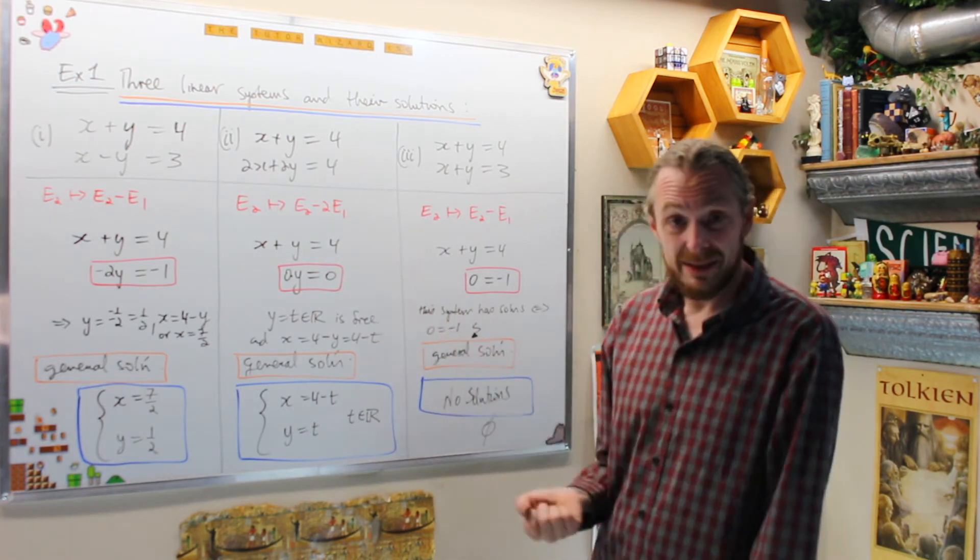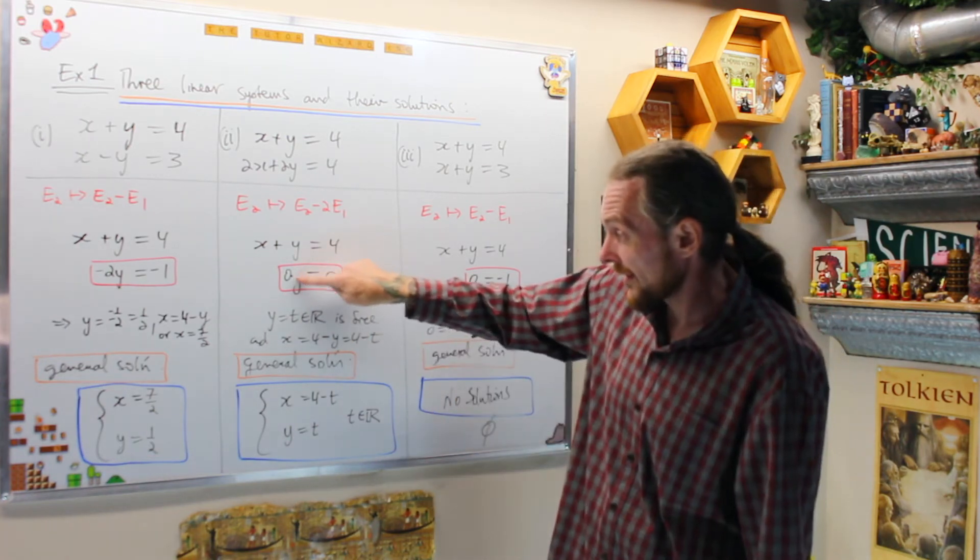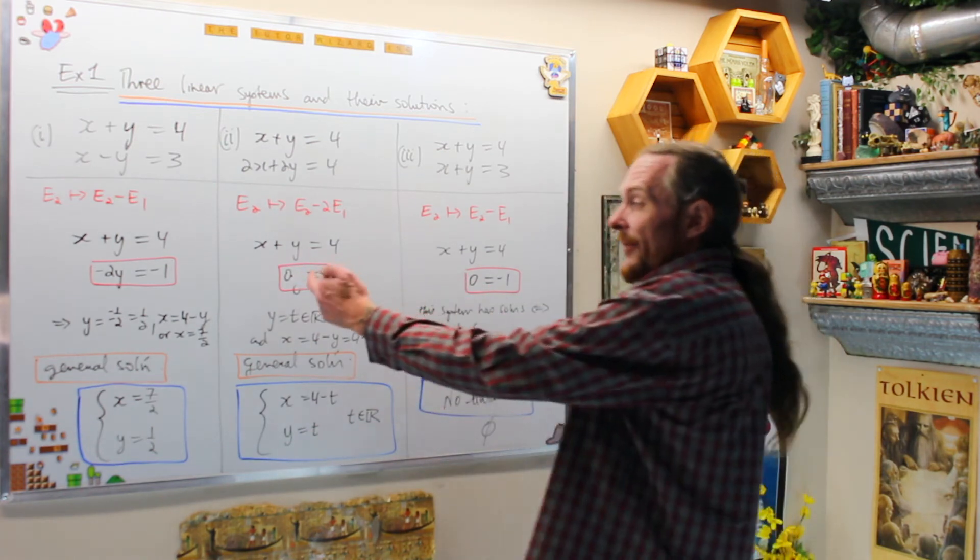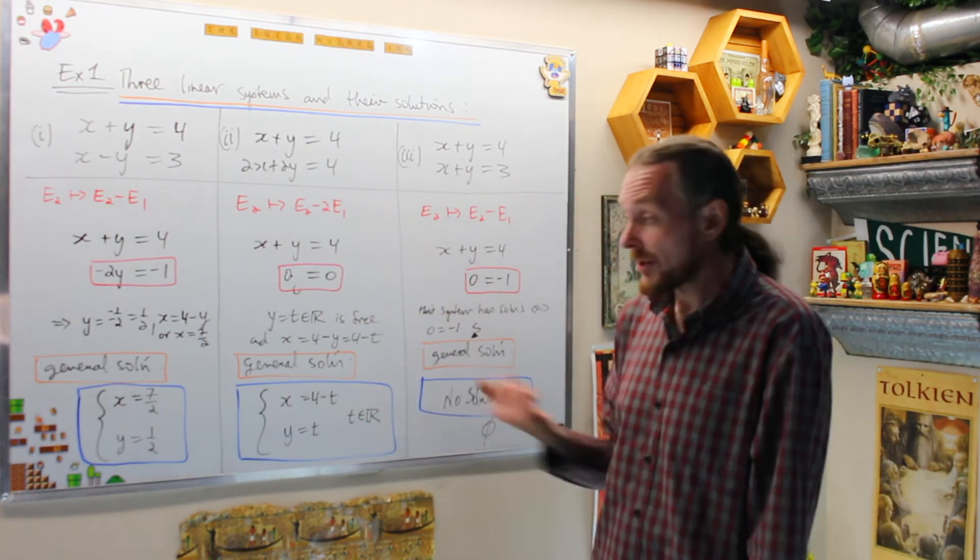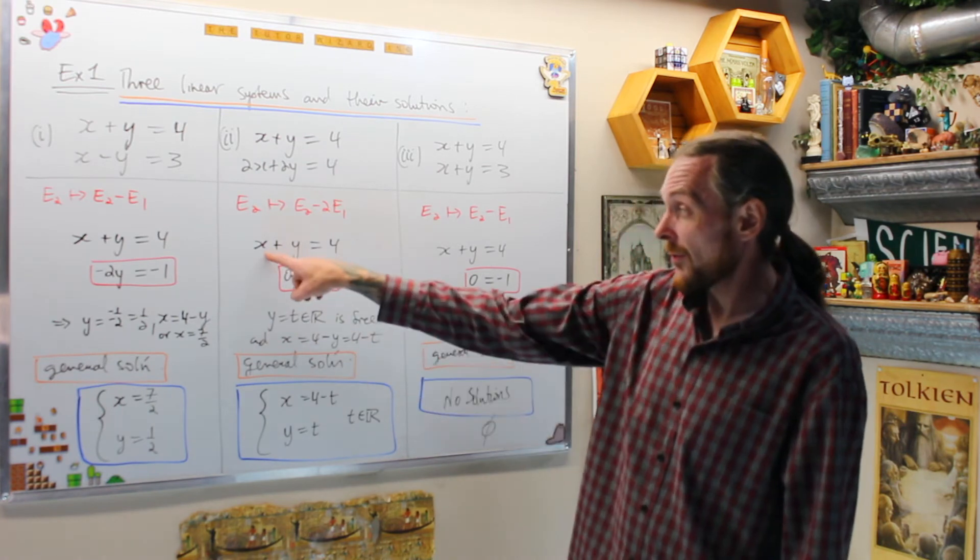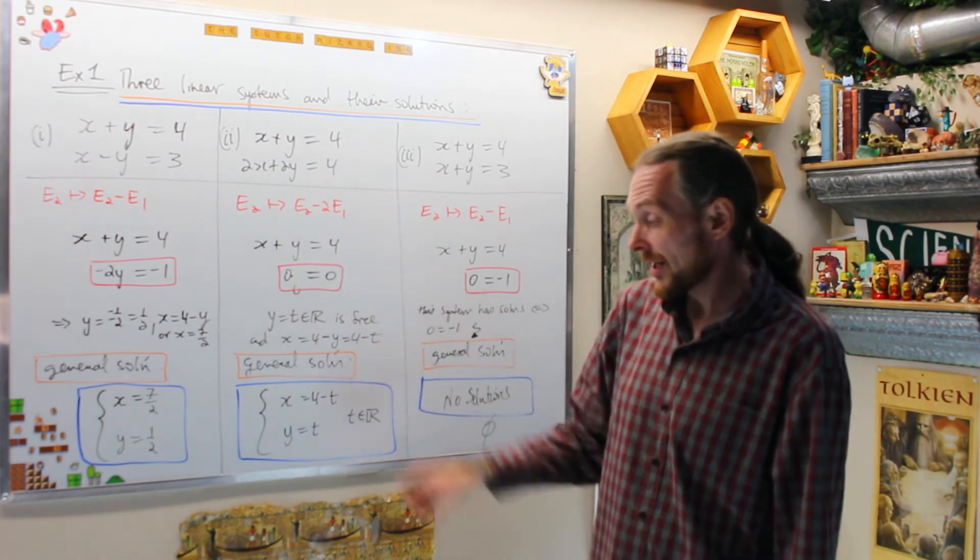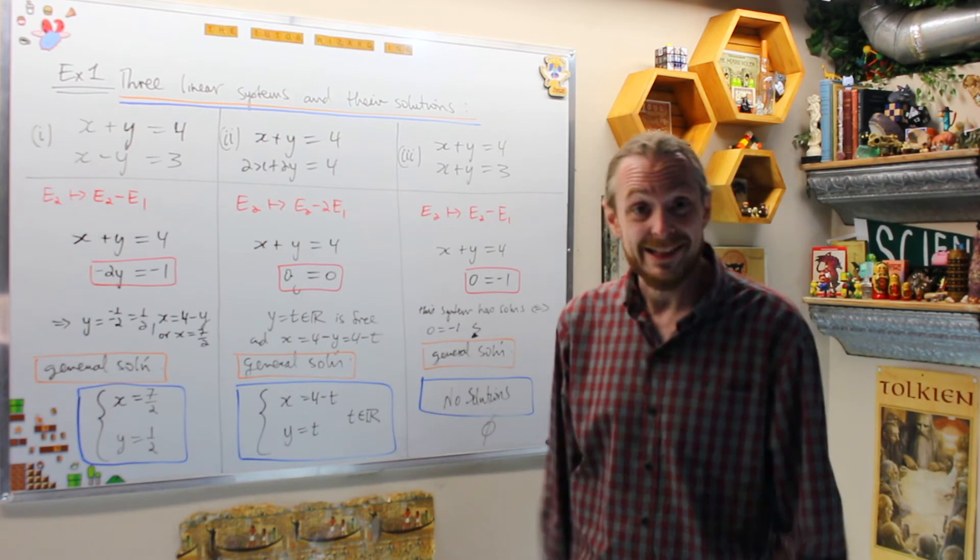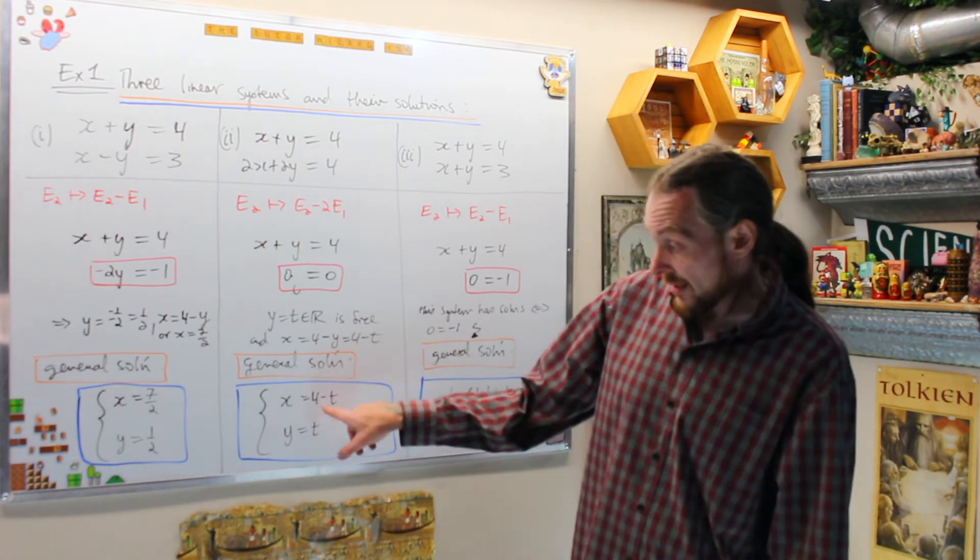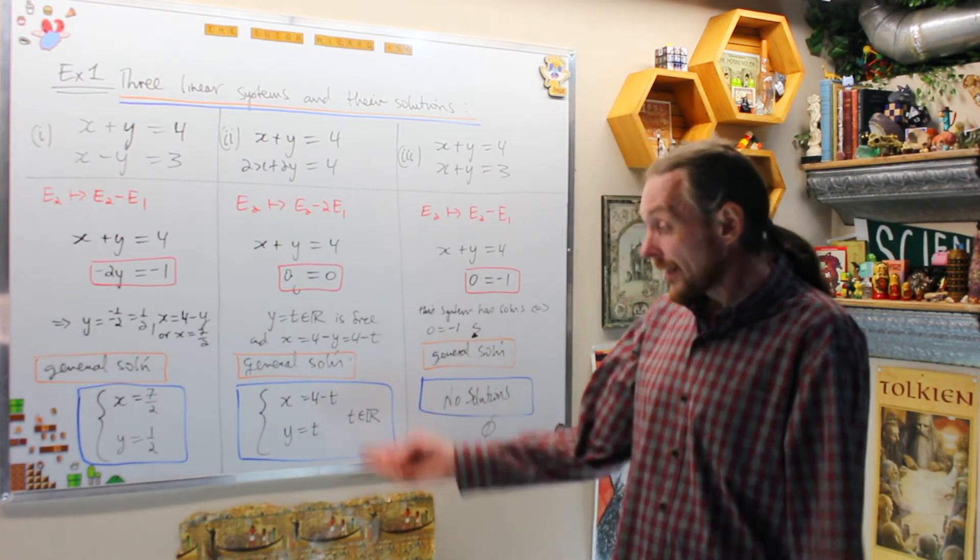What that really tells me is zero equals zero tells me that the y variable is free to be anything, so we call it t. Then we solve for x in terms of y in the second equation, and we get the general solution, which has infinitely many solutions: x is four minus t and y is t.